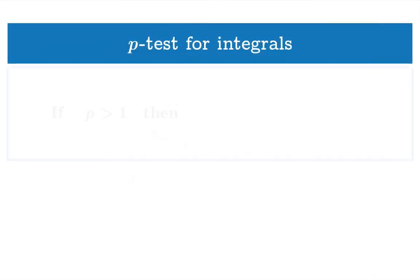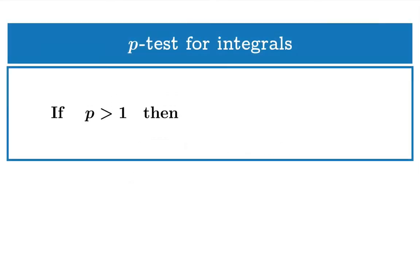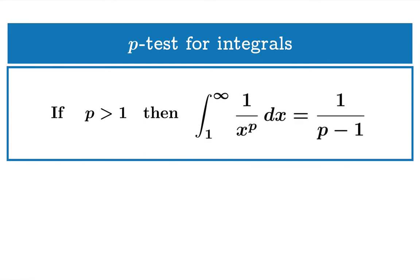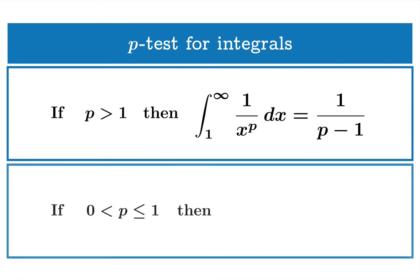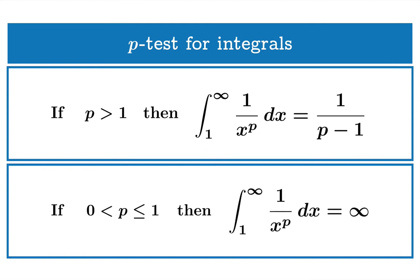So there's our p-test for integrals. If p is greater than 1, then the improper integral from 1 to infinity is finite — in fact, it's given by 1 over p minus 1. If p is between 0 and 1 inclusive, then the integral diverges.